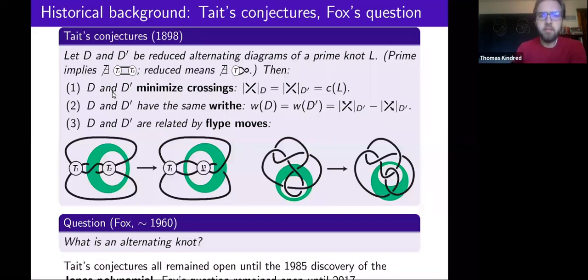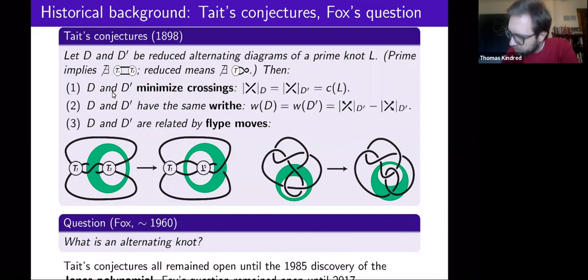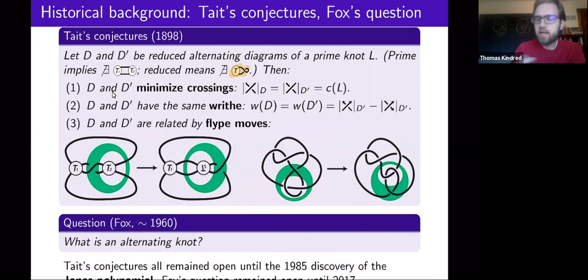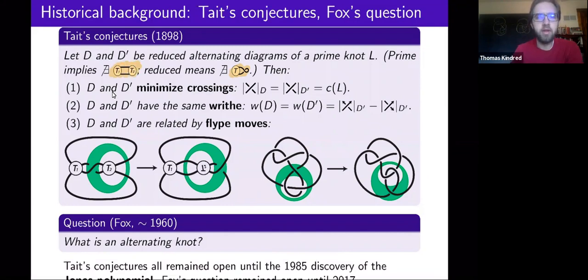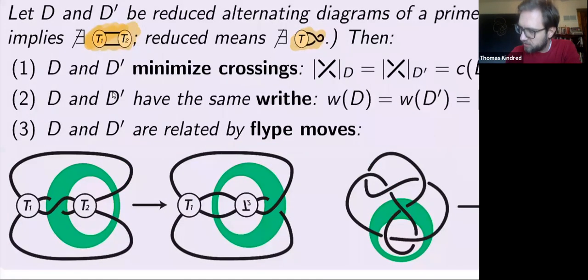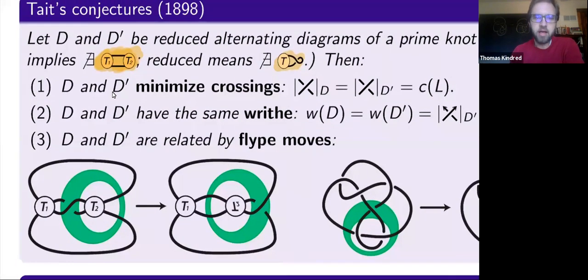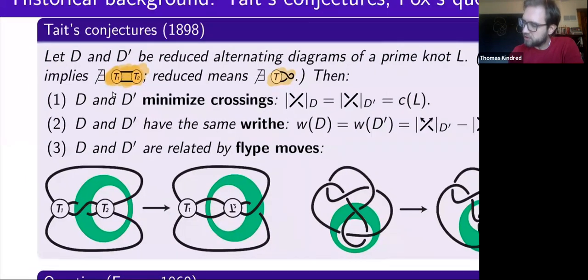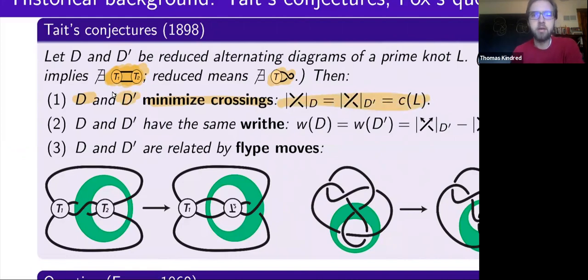Empirically, Tait made the following conjectures. The first was that if you have an alternating diagram with no kinks in it — so it's a reduced diagram — and if the knot that it represents is not a connected sum, meaning that your alternating diagram cannot be split up as a diagrammatic connect sum, then if you have an alternating diagram with no kinks and the underlying knot is prime, that diagram has the smallest number of crossings.